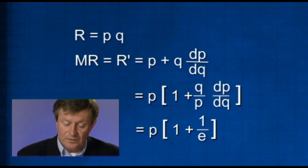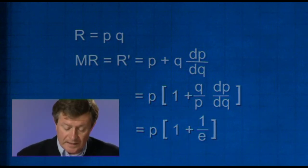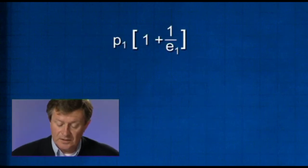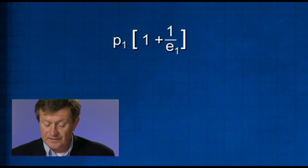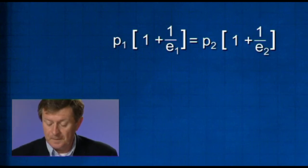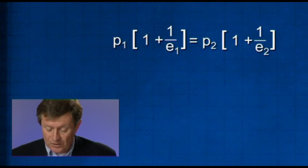So the marginal revenue in market 1 then is P1 times 1 plus 1 over E1, the elasticity in that market, and that has to be equal to the marginal revenue in market 2, so that is P2 multiplied by 1 plus 1 over E2. So this condition has to hold.